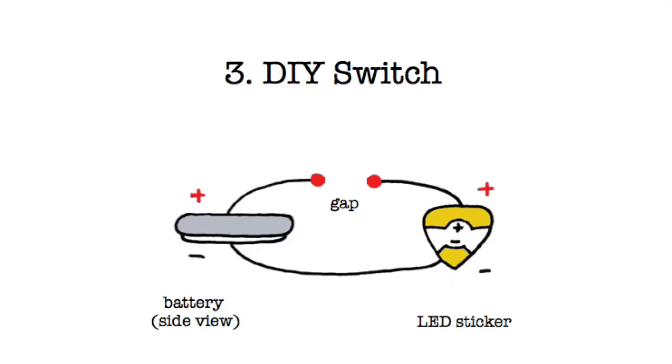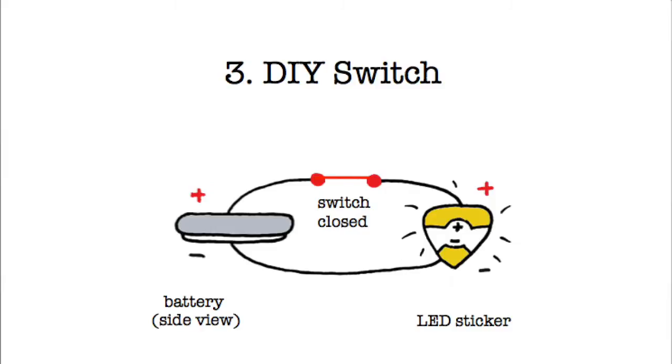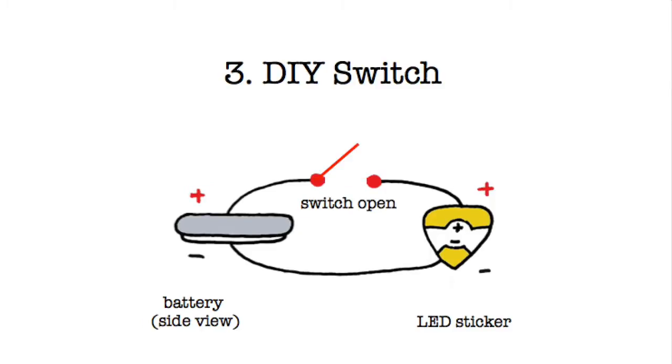A switch is a gap in your circuit that disconnects your LED from your battery. When you close the gap with a conductive material, your light will turn on. When you open the gap, the light will turn off.